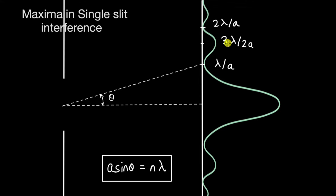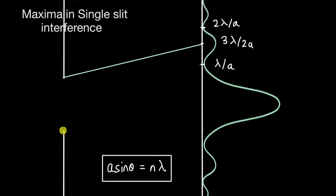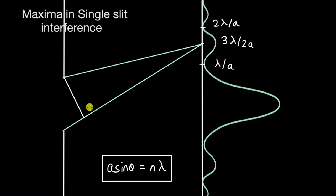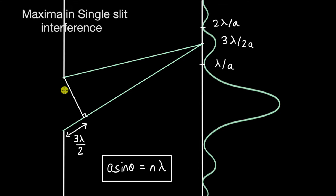If 3λ/2a is the angular position of the first maxima, then the path difference between the topmost source and the bottommost source in the slit would be 3λ/2. We know that for the first minima the path difference is λ, and for the second minima it is 2λ, so for the first maxima it should be 3λ/2. I'm calling these 'sources' because, as per Huygens' principle, all points in the slit act as secondary sources that interfere to create the diffraction pattern.